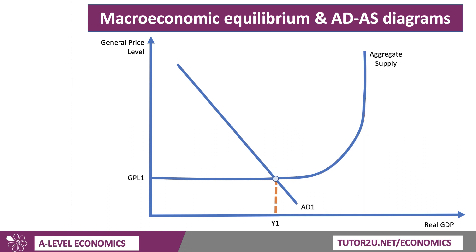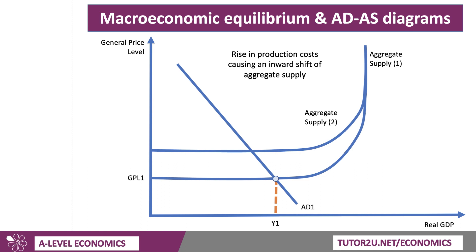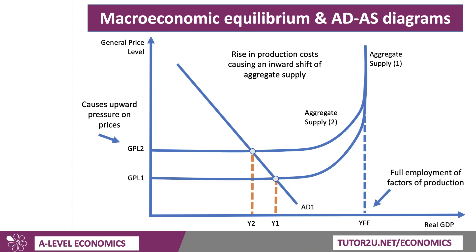Going back to our original diagram in equilibrium at Y1, it could be the case that there's an inward shift of aggregate supply, perhaps caused by a significant and systemic increase in production costs — things like the global cost of oil or gas or other components. In theory, this causes upward pressure on prices. As the price level goes up, real incomes go down and you move up the aggregate demand curve, so you get a contraction of aggregate demand and the new equilibrium is at a level of GDP of Y2. Keep in mind that YFE — the vertical section of the aggregate supply curve — is where we've reached essentially full employment or full capacity. So that level of GDP going down is a contraction in the equilibrium level of national output, taking us further away from full employment.